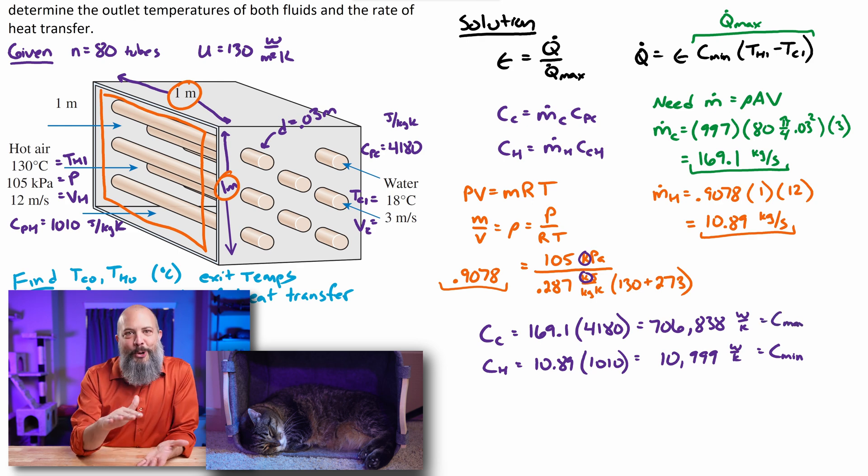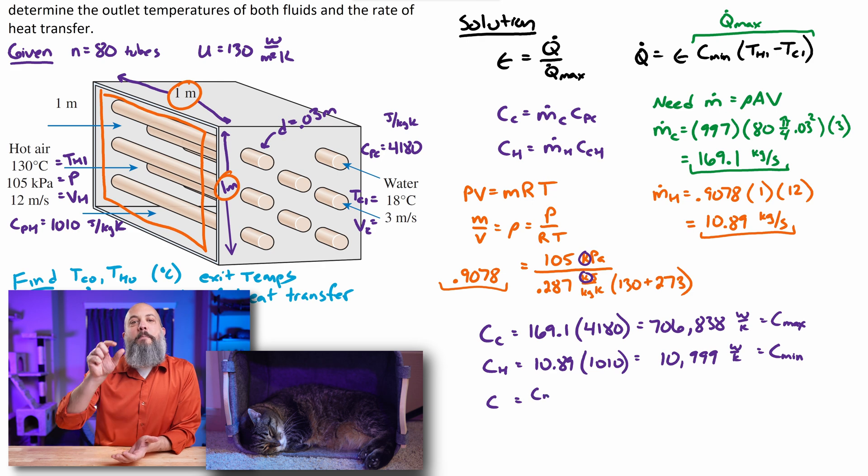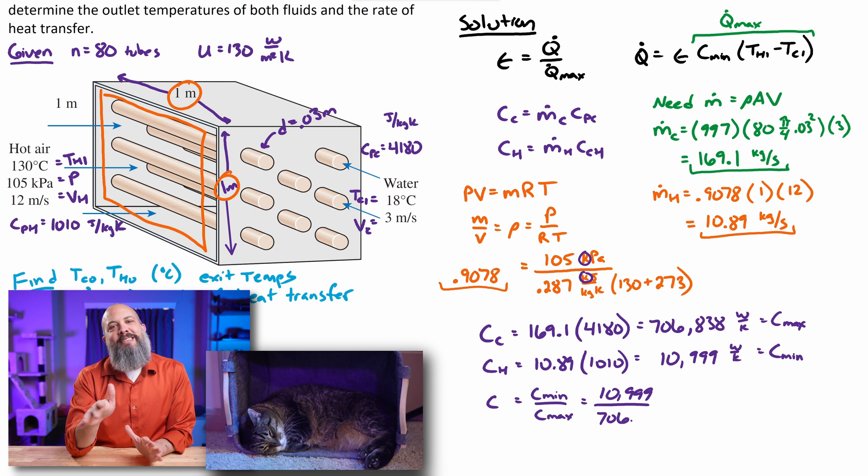So the 11,000 is going to be the minimum value for capital C, 706,000, the maximum value for capital C. The ratio between those two, either just capital C by itself, you might also call this CR for heat capacity ratio. The minimum C divided by maximum C, the 11,000 divided by 706,000. 0.01556 is capital C, also sometimes called CR, heat capacity ratio.